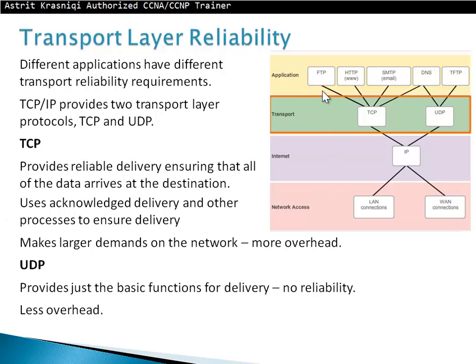For example, FTP uses TCP for reliable transport. HTTP and web browsing use TCP. Email uses TCP. DNS uses both TCP and UDP — both reliable and unreliable. TFTP, the trivial file transfer protocol, uses UDP. UDP offers no reliability or guarantee, but that doesn't mean it's not useful — most data will get to the destination, there's just no guarantee that it will.